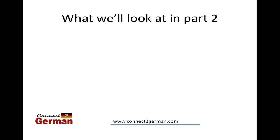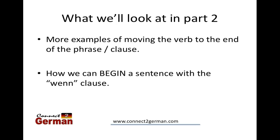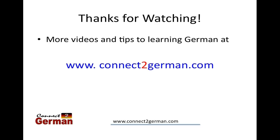What we're going to be looking at in part two is a few more examples of moving the verb to the end of the phrase in our WENN clause. But we're also going to look at how you can begin a sentence with a WENN clause. All of these examples had the WENN clause as the second clause. You can actually, just like in English, have the WENN clause come first or second — there's a little trick to what happens when you begin the sentence with the WENN clause, though. We'll take a look at that in part two. Thanks for watching, and be sure to stop by ConnectToGerman.com for more videos. Stay tuned for part two.